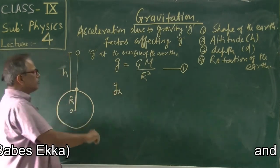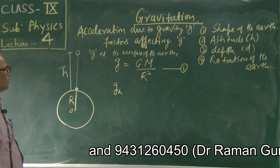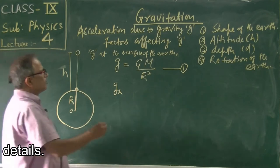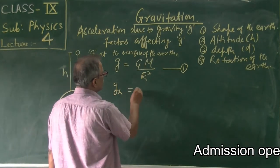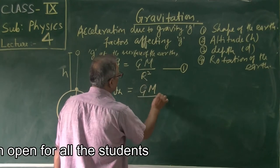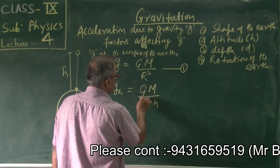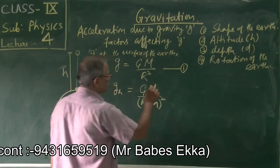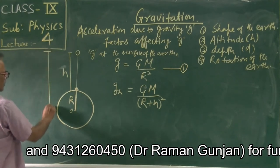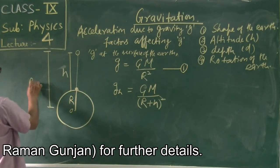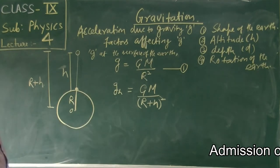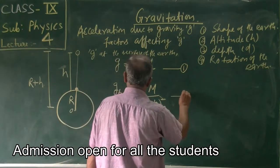Acceleration due to gravity g_h at height h from the surface of the earth: the expression becomes GM by r plus h whole square. This is your second equation.